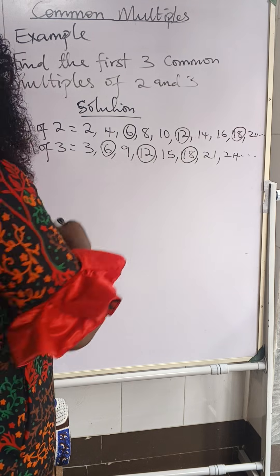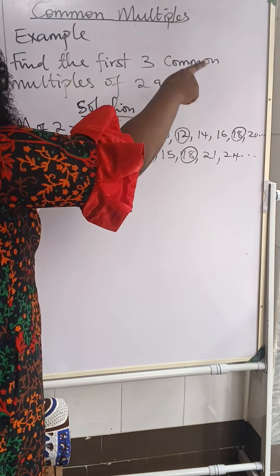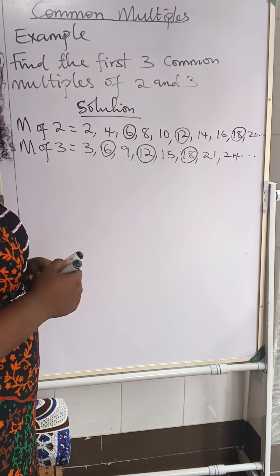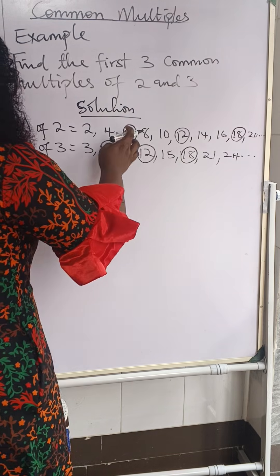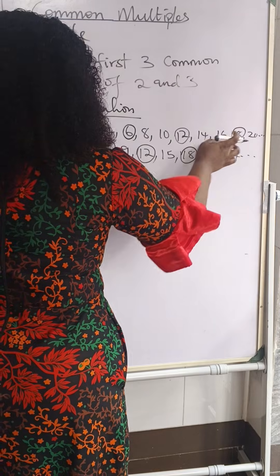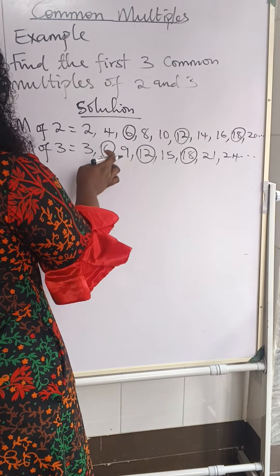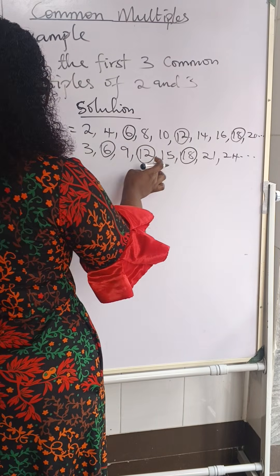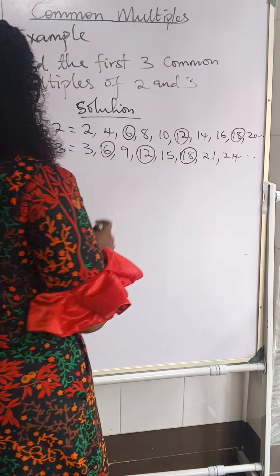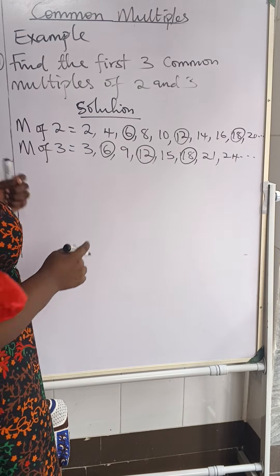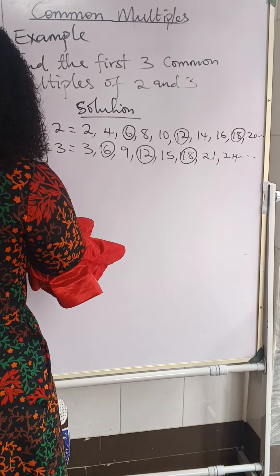The question says the first three common multiples, so we have one, two, three. They are common to both because we have six, six; twelve, twelve; and eighteen. So the first three common multiples of two and three are six, twelve, and eighteen.